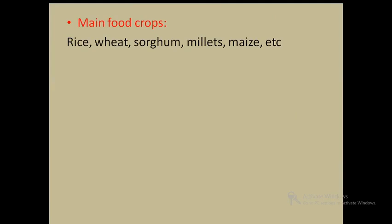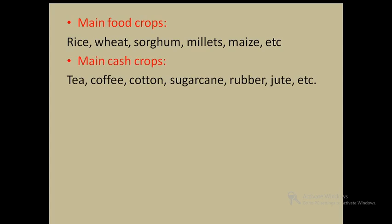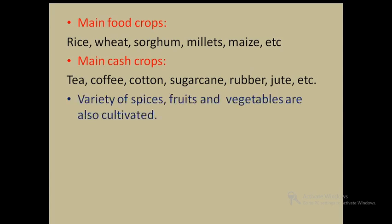Some of the main food crops grown in India are rice, wheat, sorghum, millets, maize, etc. Apart from these, we also have cash crops like tea, coffee, cotton, sugar cane, rubber, jute, etc. Along with these crops, a variety of spices, fruits and vegetables are also cultivated in India.